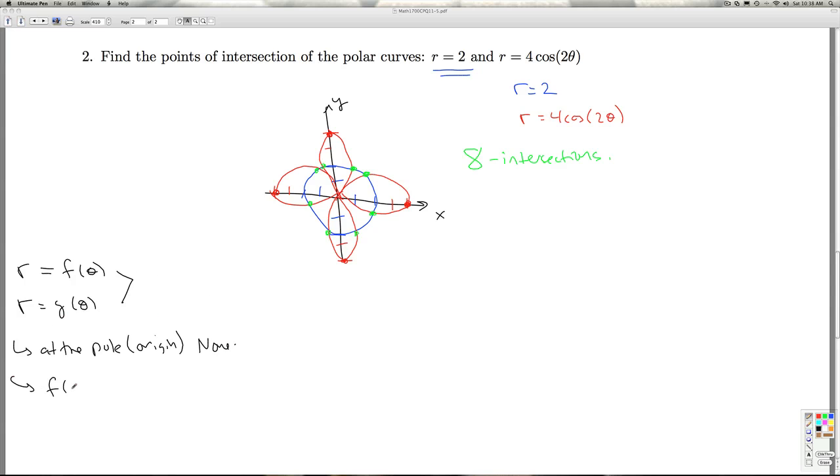The second thing we do is we set the functions of theta actually just equal to each other and see what we get out of that. So in this case, I set 2 equal to 4 cosine 2 theta. And so that means I get cosine of 2 theta is a half.